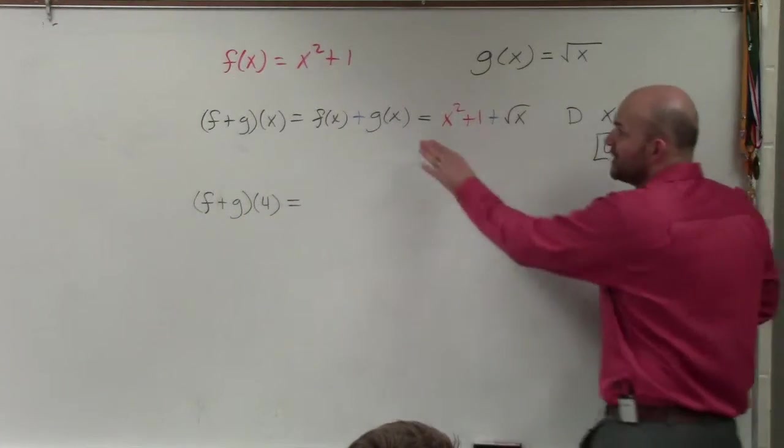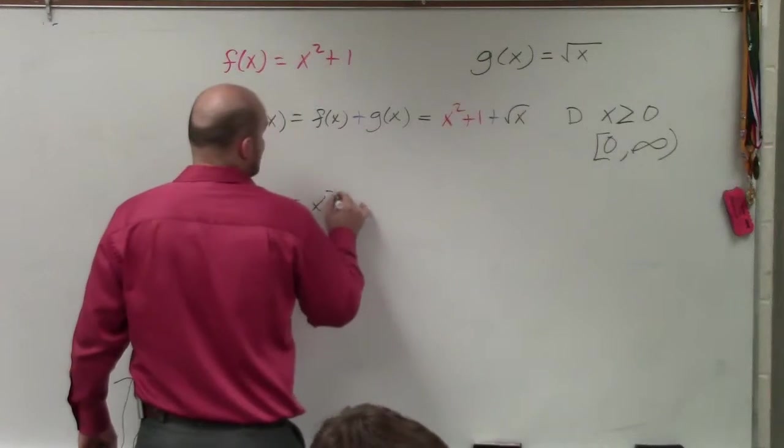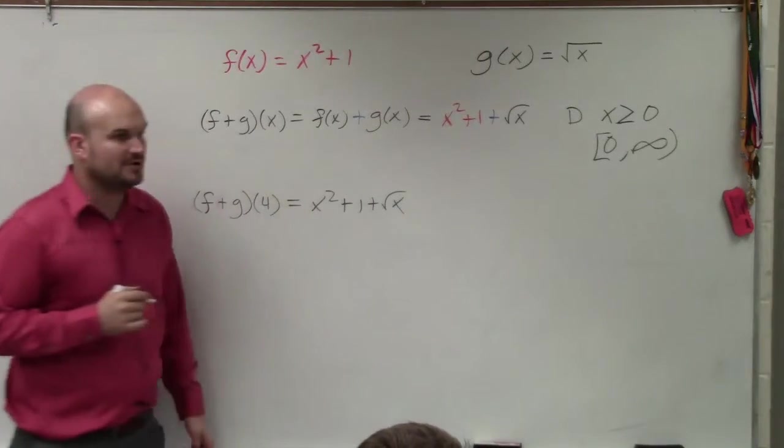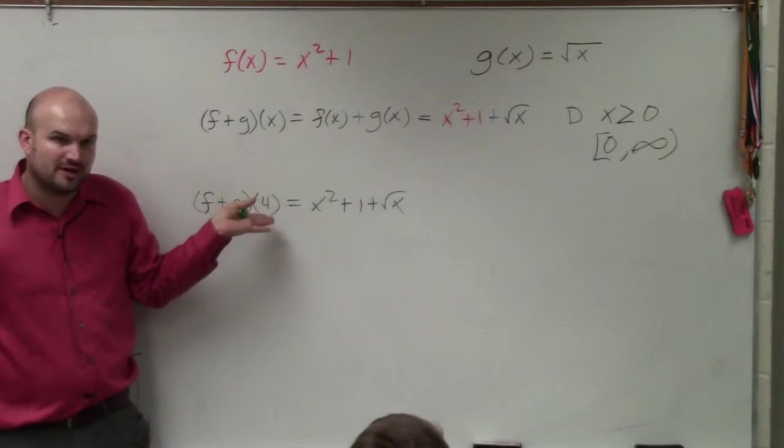So since we already did the addition of them, I can simply take the addition of them, which is x squared plus 1 plus square root of x. So now I just need to change the input variable to 4.